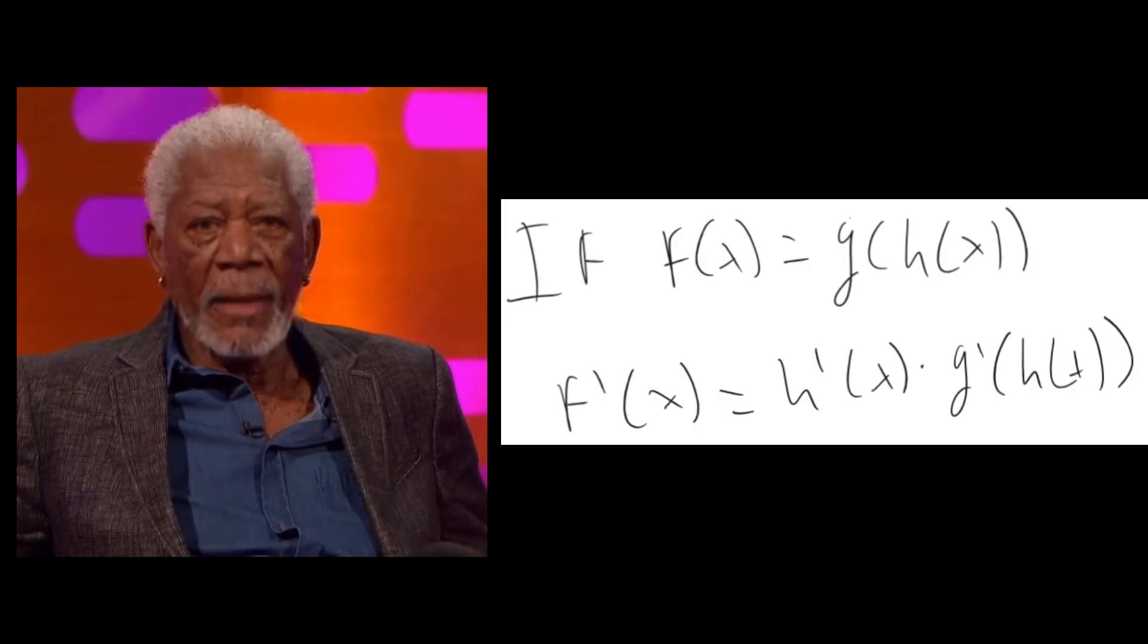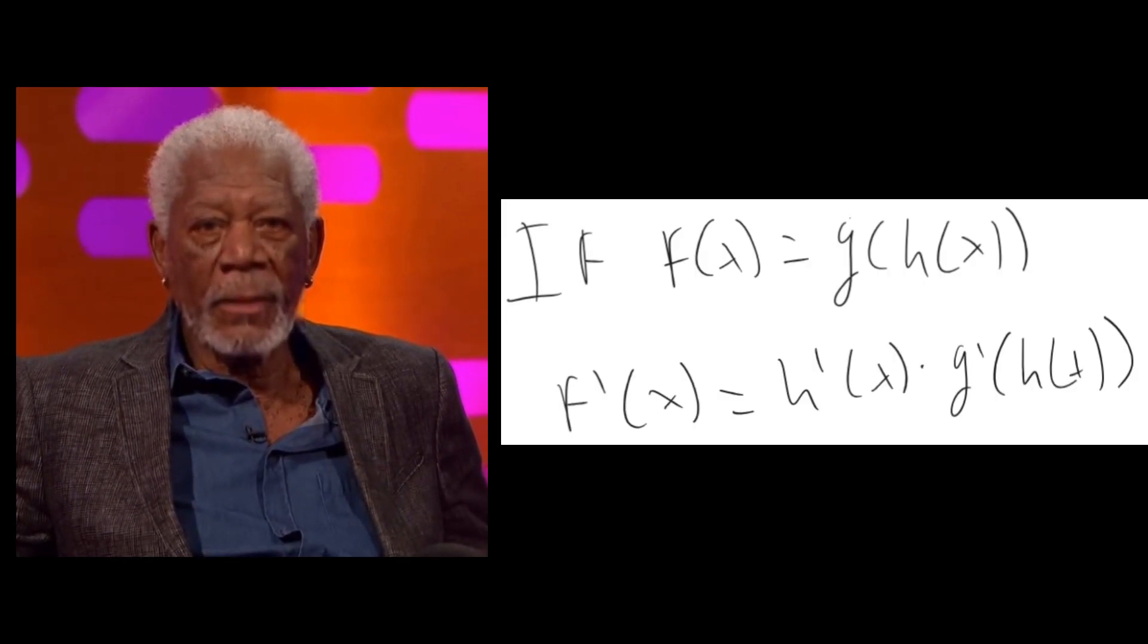Exactly, young Travis. So the chain rule states that when differentiating a function like this, you first take the derivative of the inner function, then multiply by the derivative of the outer function with the original inside function plugged back in. This is h prime of x times g prime of h(x).